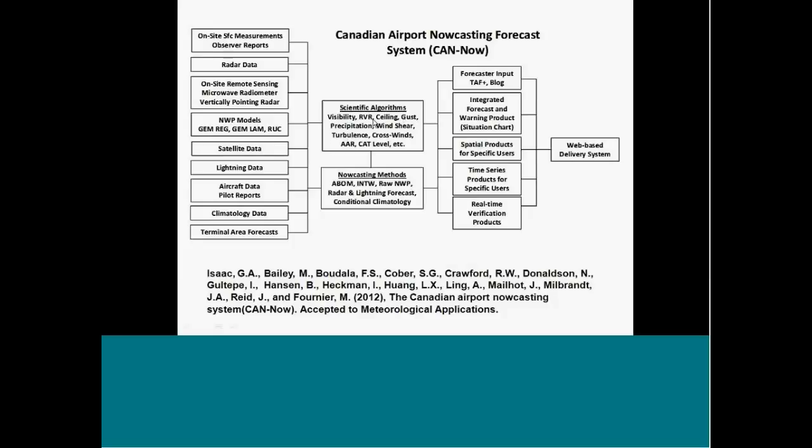which predicts things like visibility, runway visual range, ceiling, gust, precipitation, wind shear, turbulence, crosswinds, airport arrival rate, CAT level, et cetera. And we also introduced some nowcasting methods, which I'll describe later on. And we output this onto a website, and I'm going to describe that as well a bit later on.